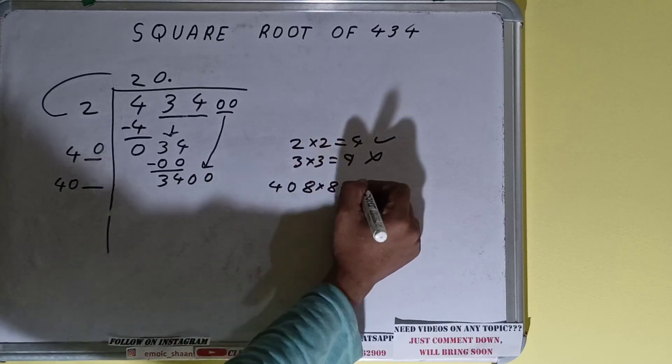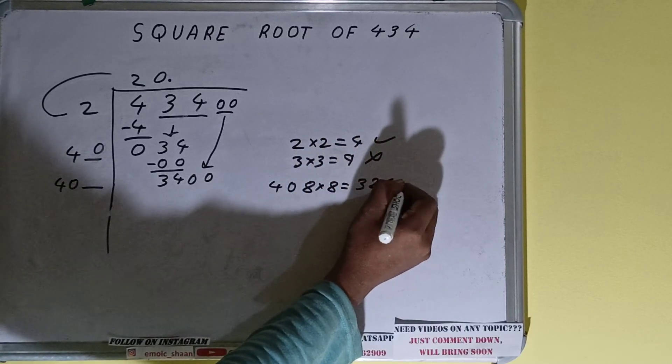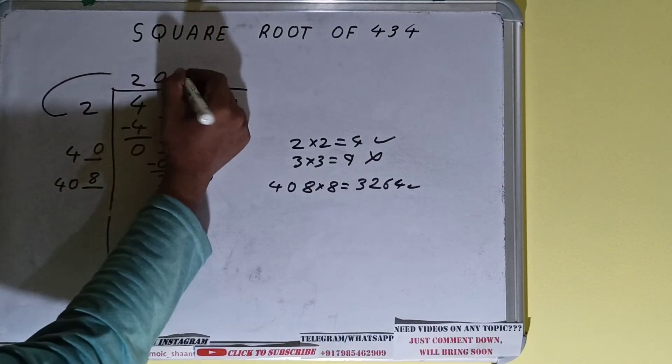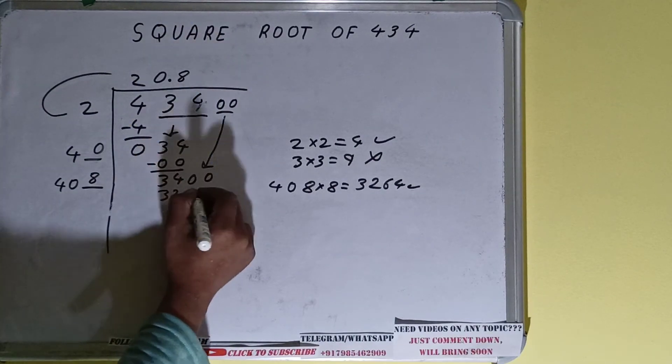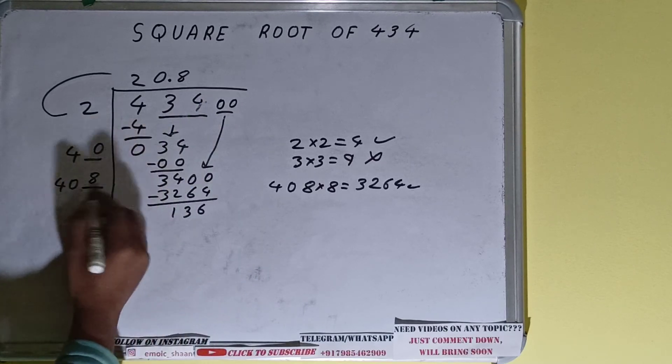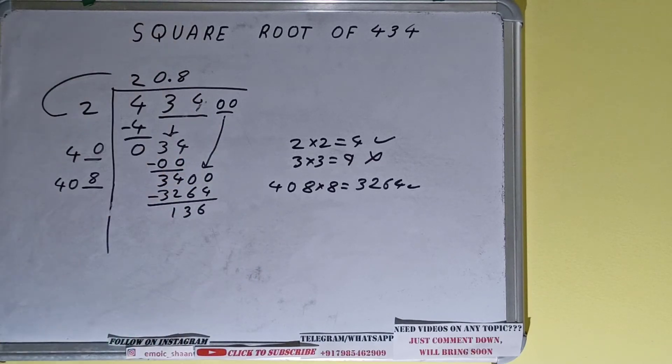If we try 8 times, it will be 3264, which is good to use. So 8 here and 8 here. 3264, subtract it and 136 will be left.